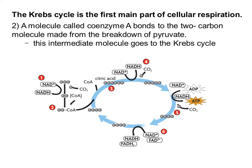Step two of the Krebs cycle is that we're going to combine a molecule called coenzyme A onto this two-carbon acetyl group. Coenzyme A is going to join onto it literally just to get it into the Krebs cycle and then it's going to leave. So you can think of coenzyme A as being kind of like a helper — its literal job is just to get these two carbon atoms into the Krebs cycle.